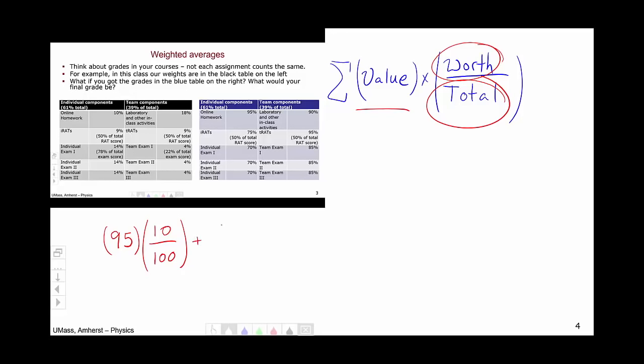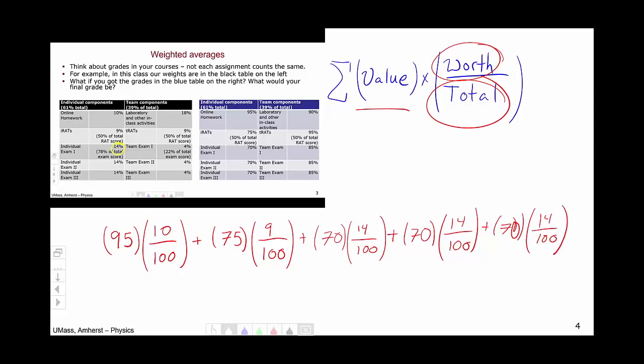This hypothetical student achieved a 75 on the IRATs which are worth 9 out of 100. On exam 1, our student achieved a 70. And exam 1 is worth 14 out of the total 100 for the course. Our hypothetical student did the same on the other two exams, so I'm going to repeat this two more times.